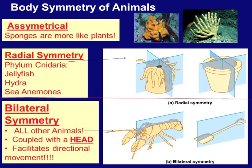Let's compare body symmetry of animals. Some groups, like the sponges, are asymmetrical — they grow whichever way benefits them, more like plants. Radial symmetry is like a pot: you can cut a sea anemone like a pizza pie into equal pieces, and we see radial symmetry in sea jellies, hydra, and anemones. Bilateral symmetry means we can split the organism into left and right halves only — all other animals — and they typically have a head that facilitates directional movement, with the head guiding the rest of the body through sensory organs.